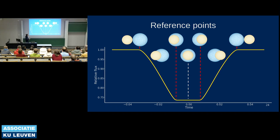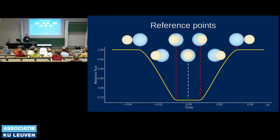With different sized stars we have additional reference points. After first contact, flux decreases until the smaller star — in this case in front — reaches internal tangency with the larger star's disc, meaning the two circles are internally tangent. From that point, assuming uniform brightness across the disc, the light stays at its minimum and the bottom of the eclipse is completely flat.